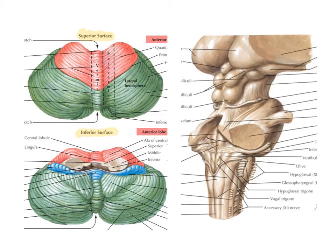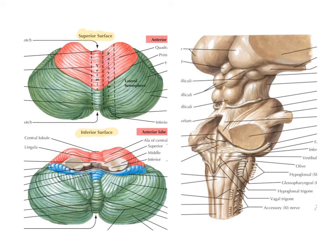We can see there are two major parts of the cerebellum. There is this midline structure called the vermis — vermis means worm — and you can see here it's elongated and a bit worm-like. And there are two hemispheres: a left and a right cerebellar hemisphere, just like we've got for the cerebrum.